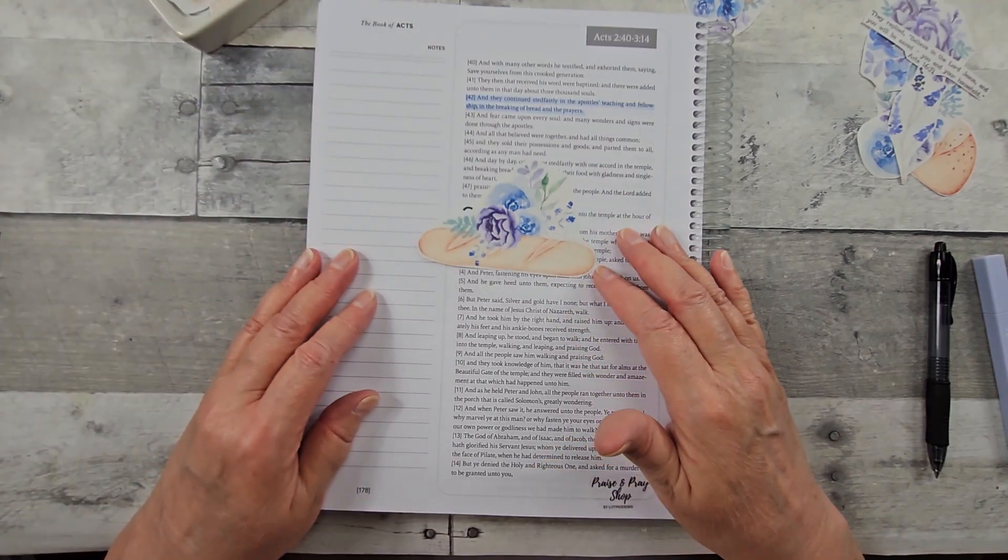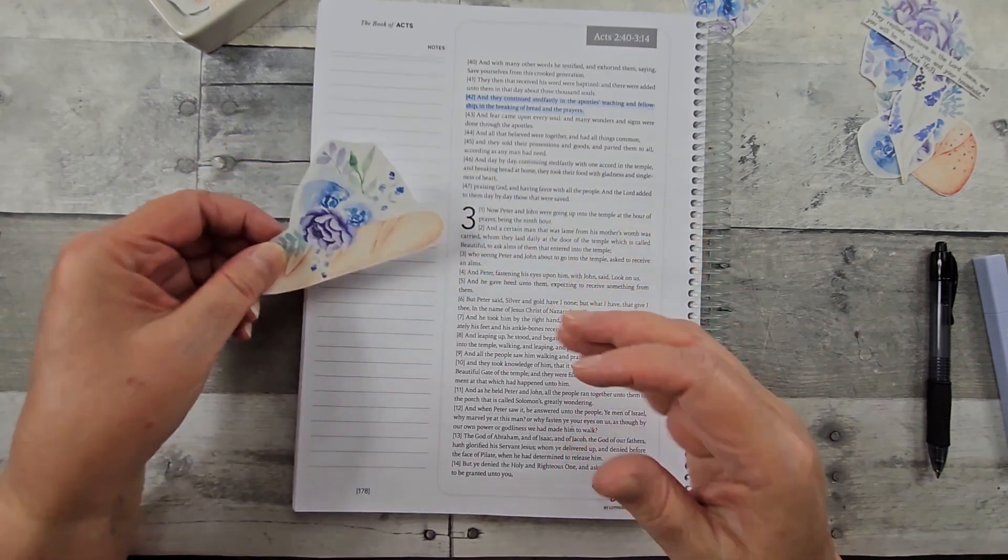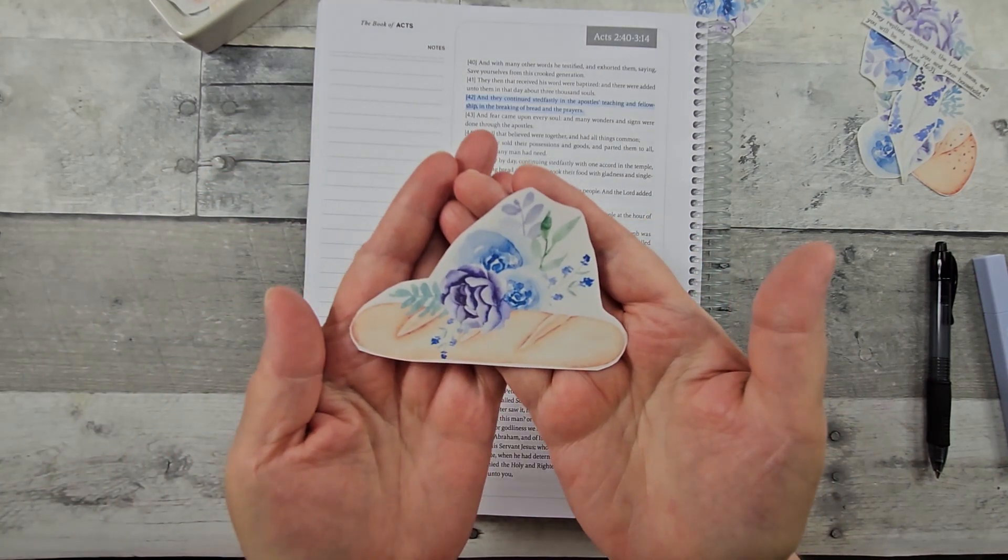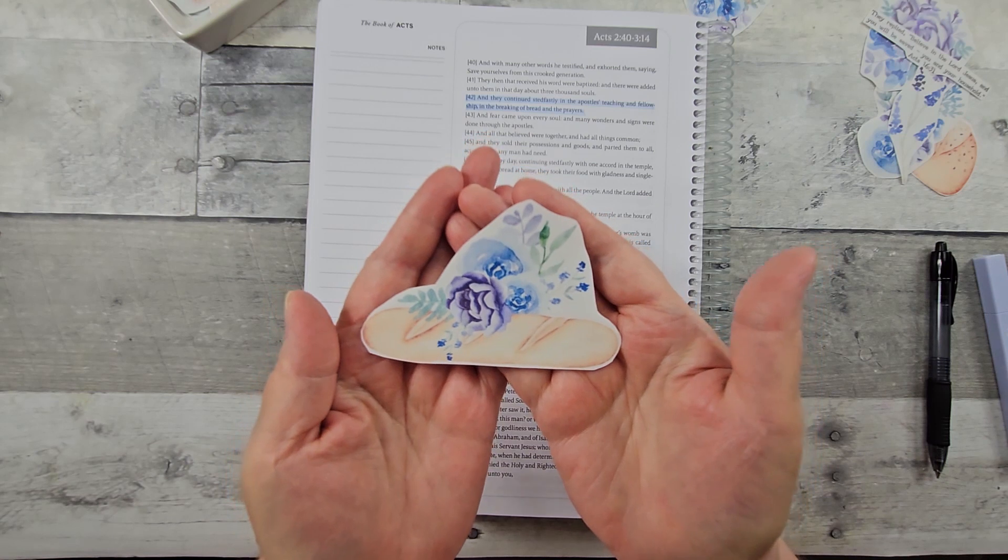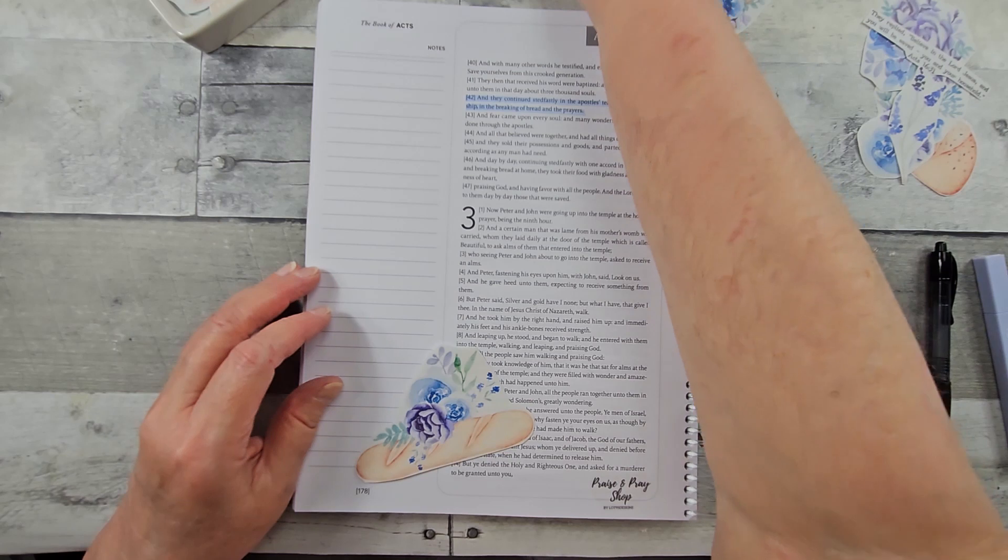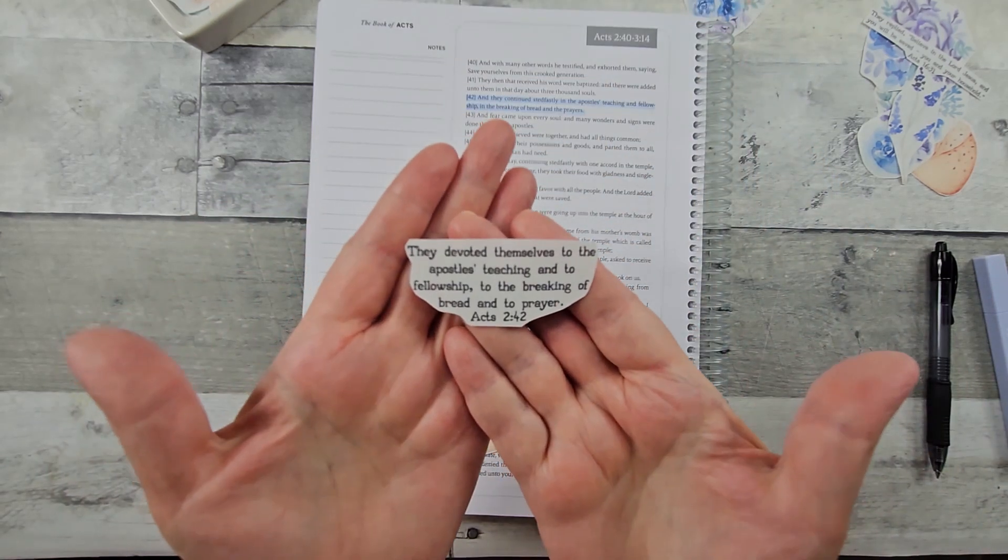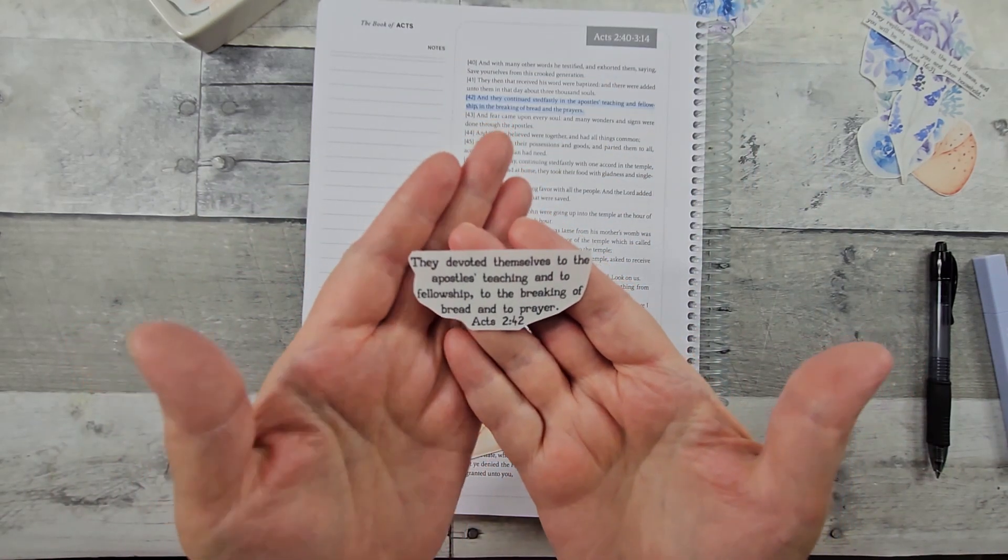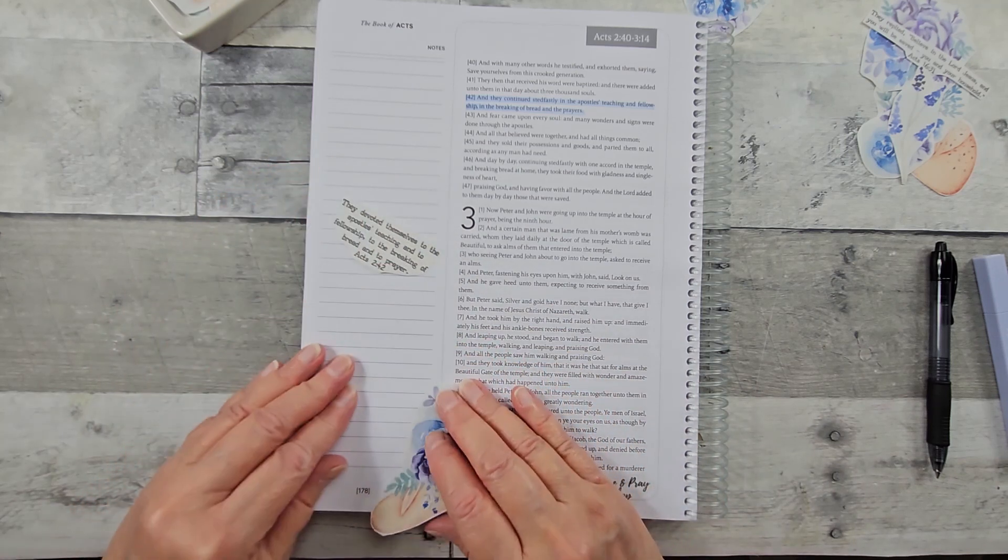Since it talks about the breaking of bread, this was a really nice printable for this particular verse. In fact, it was specific to this verse. Because as you can see here, this is part of the printable.